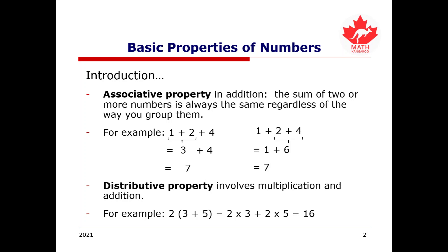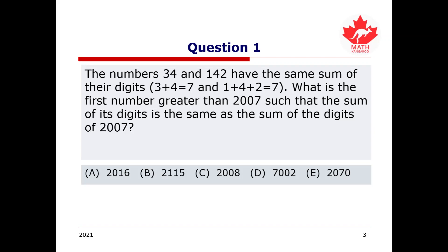Question 1 states: the numbers 34 and 142 have the same sum of their digits — 3 plus 4 equaling 7, and 1 plus 4 plus 2 also equaling 7. What is the first number greater than 2007 such that the sum of its digits is the same as the sum of the digits of 2007? Will it be A: 2016, B: 2115, C: 2008, D: 7002, or E: 2070? Pause the video and try to solve it yourself first.